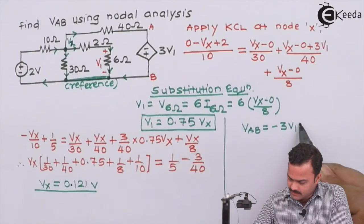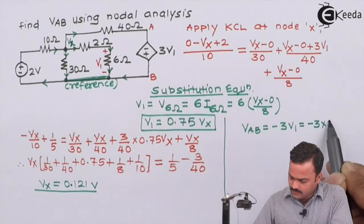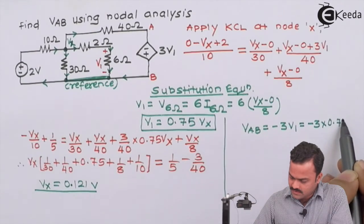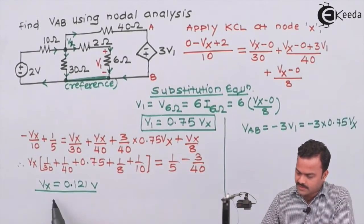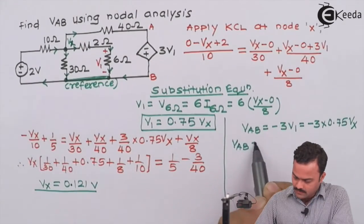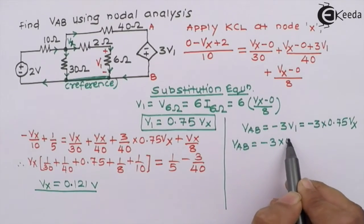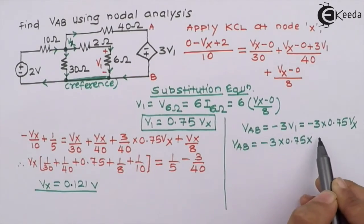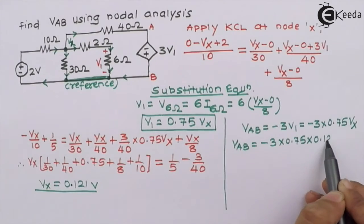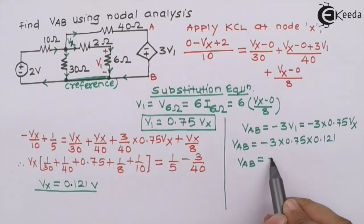So V1 is 0.75 Vx. So basically, this is nothing but minus 3 into 0.75 Vx. And Vx, we got the value. So upon substituting, we can write this as minus 3 into 0.75 into Vx is 0.121. So finally, we will get Vab as minus 0.272 V.